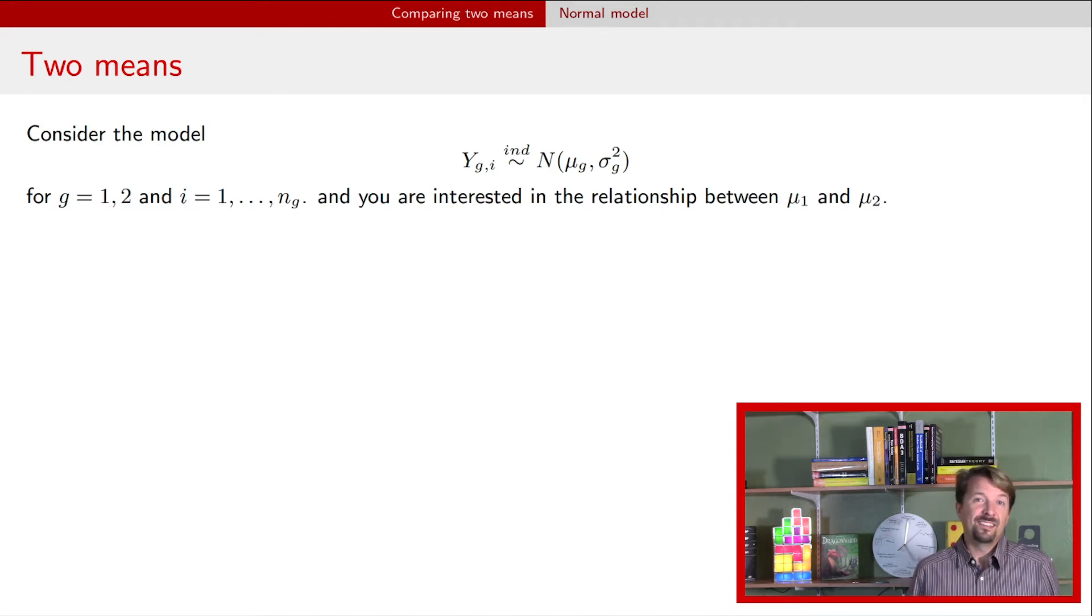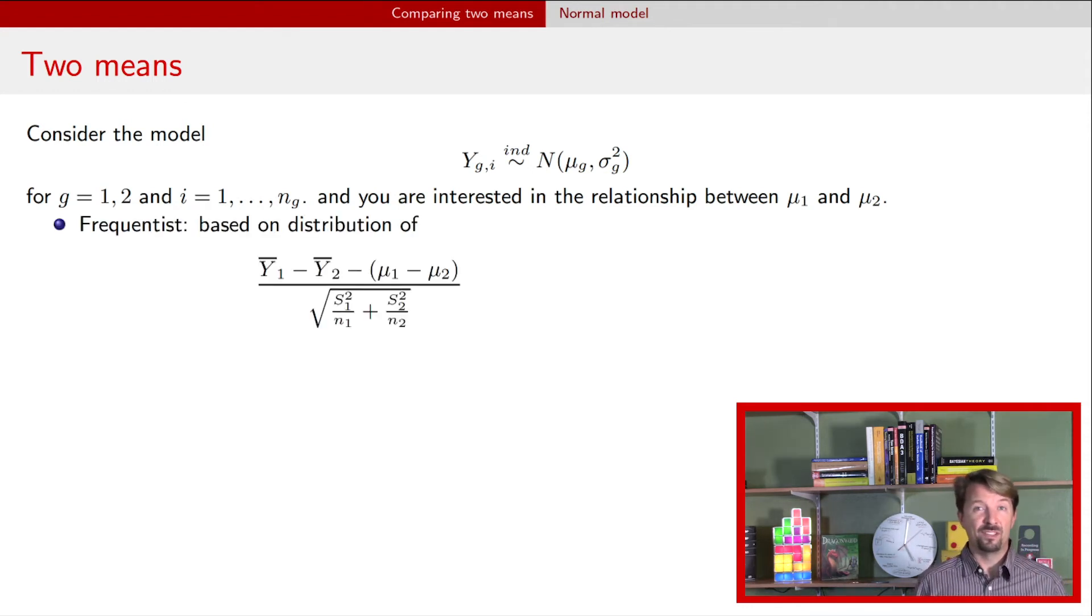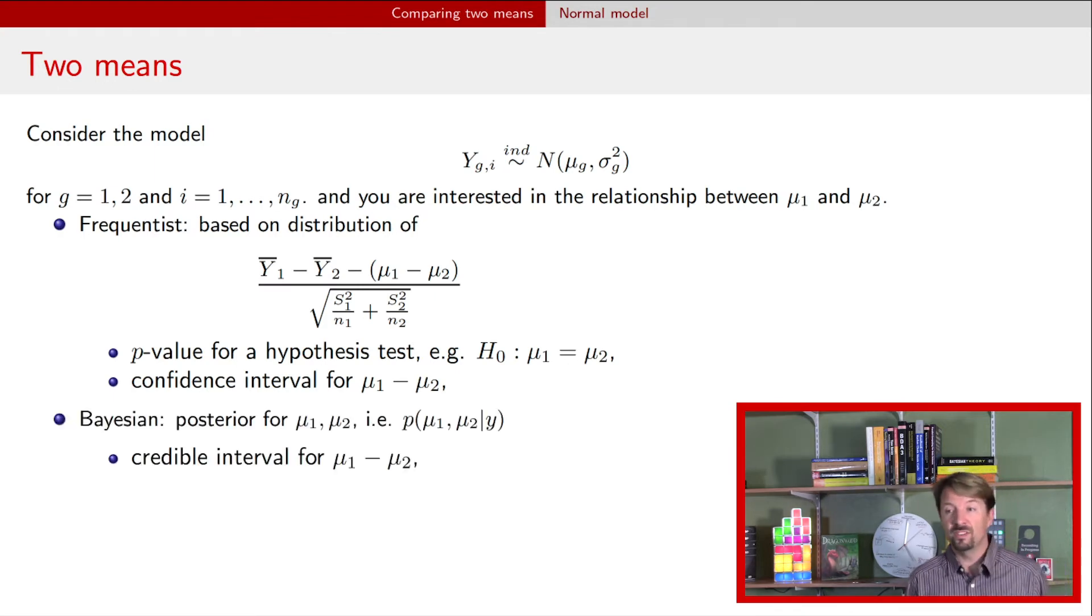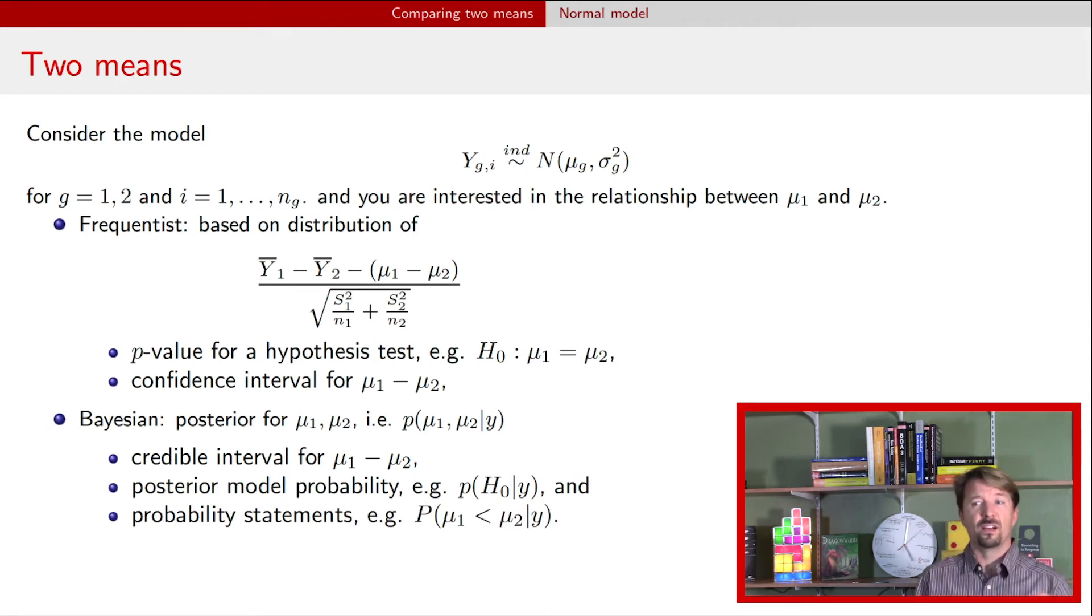And now typically what we're interested in is saying something about the means of these two groups, that is we're interested in comparing mu one and mu two. We can take very much the same approach that we took previously. We're going to have the sampling distribution of some statistic that can allow us to calculate p-values from particular hypothesis tests, for instance that the two means are equal, for constructing confidence intervals. We can take a Bayesian approach and we can get a posterior distribution for the two parameters, we can construct credible intervals for their difference, we can calculate probabilities of hypotheses being true, we can calculate probabilities of comparisons of those two parameters. I just want to note here that generically in my Bayesian posterior notation I just conditioned on Y but Y always represents all of the data.